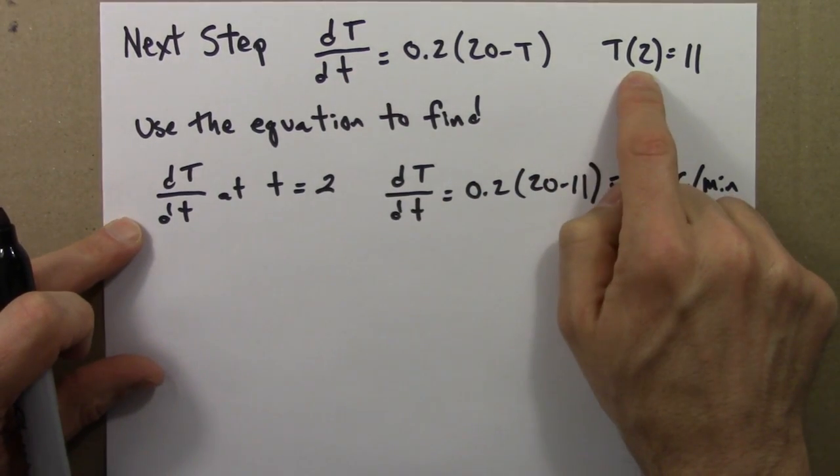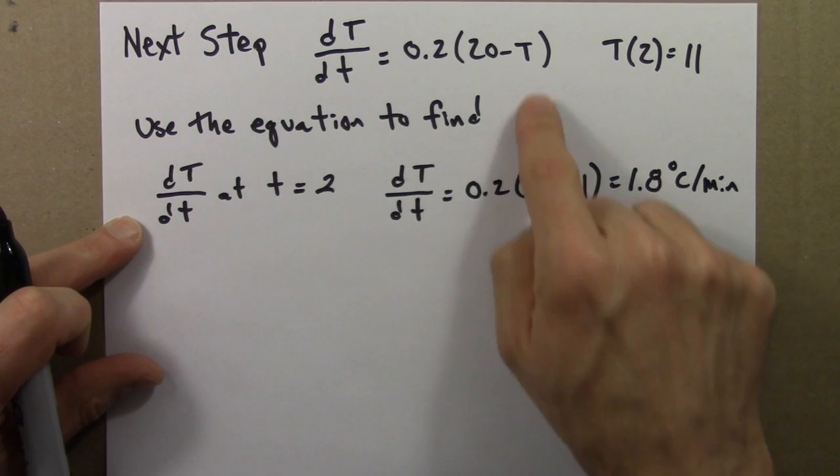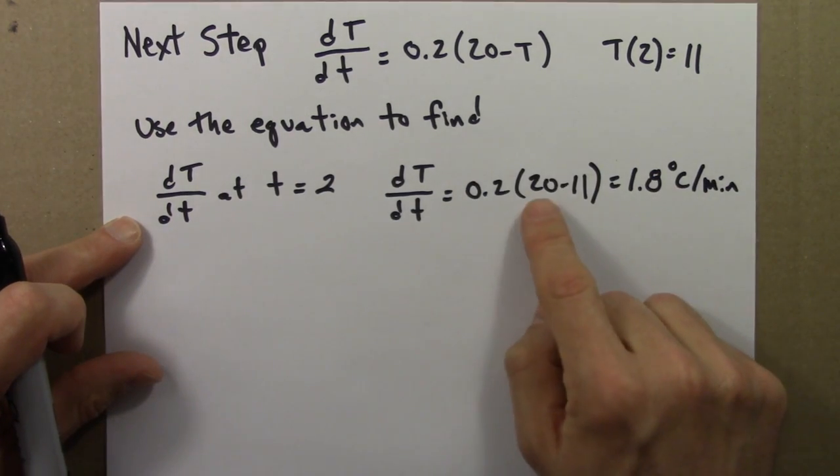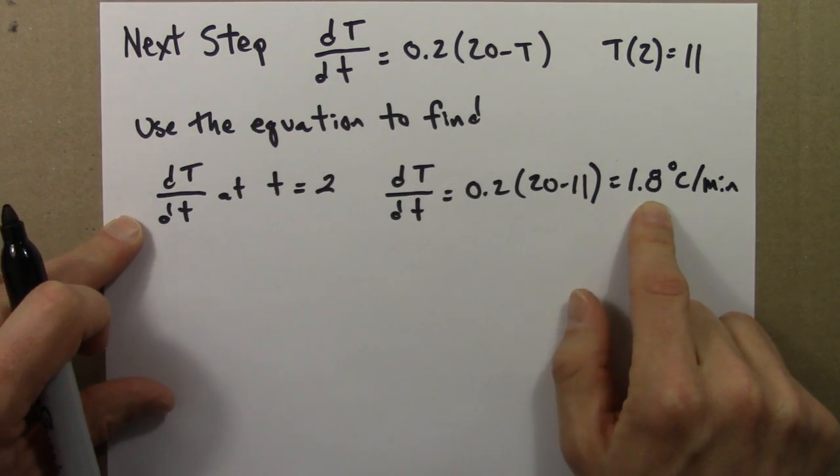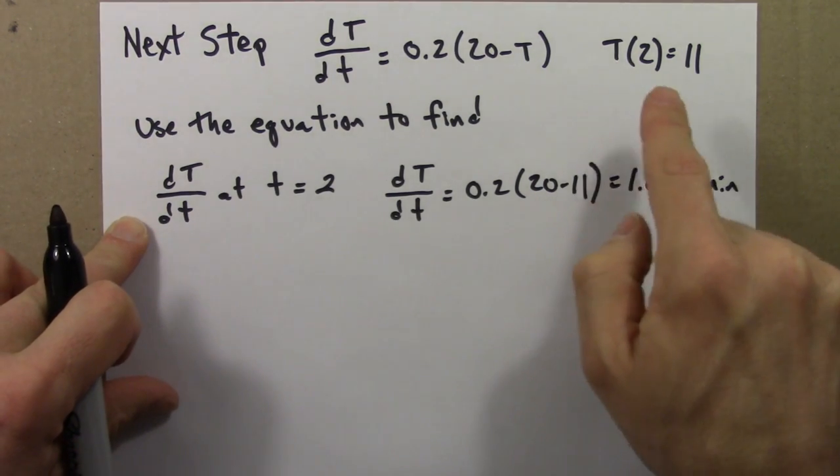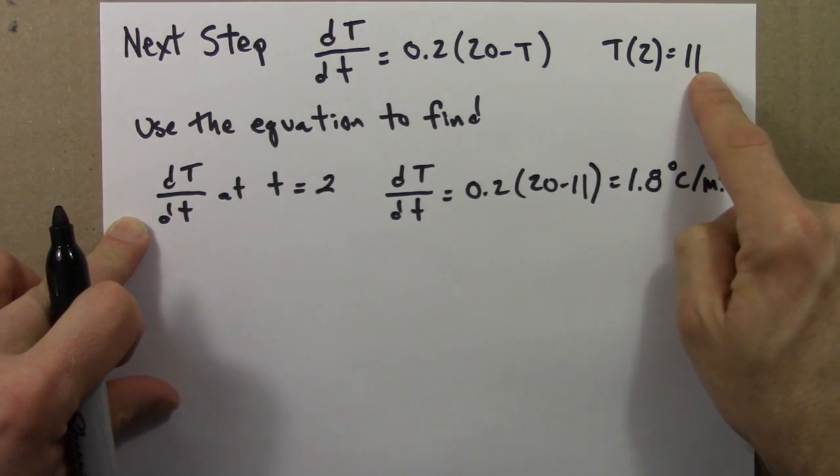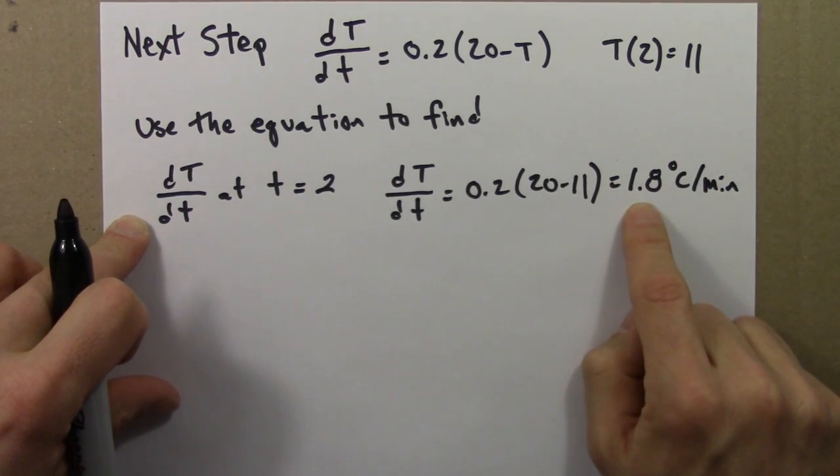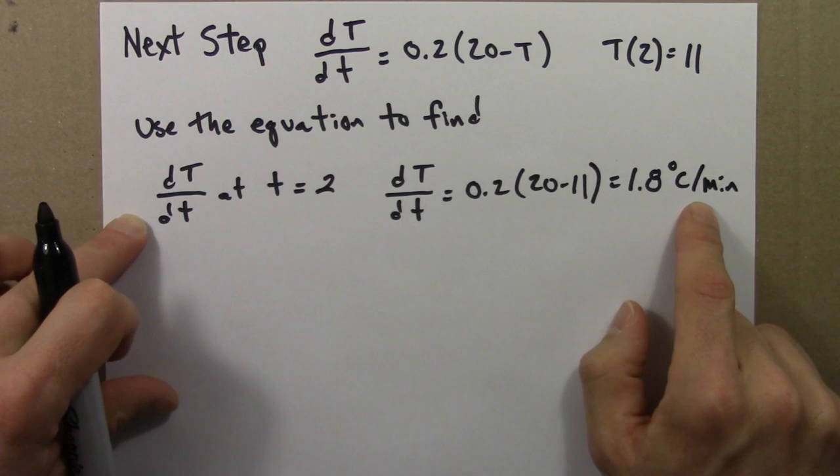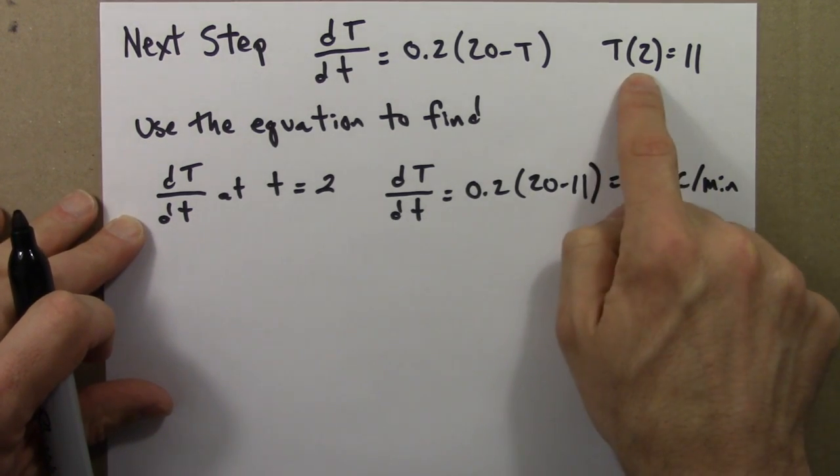So when time is 2, we plug in 11. So capital T is 11. 20 minus 11 is 9 times 0.2 is 1.8. So now we know that when the temperature is 11, it is warming up at 1.8 degrees per minute. So now suppose we want to know T of 4, 4 minutes in.